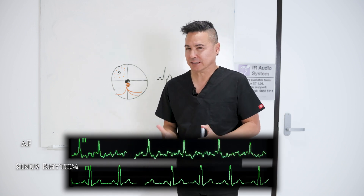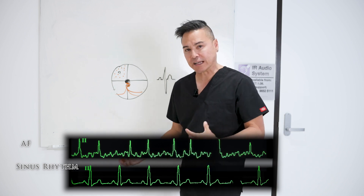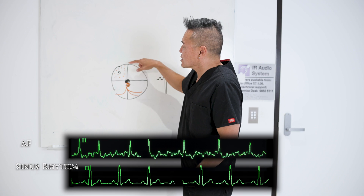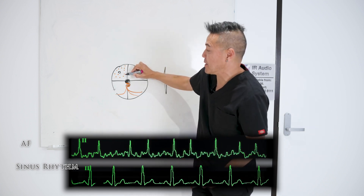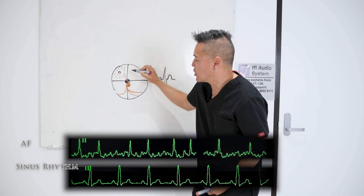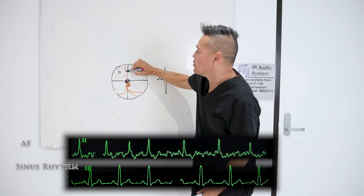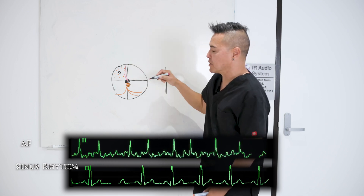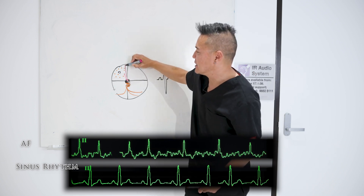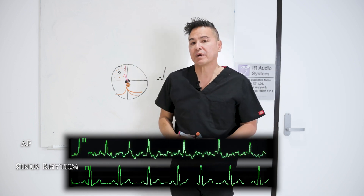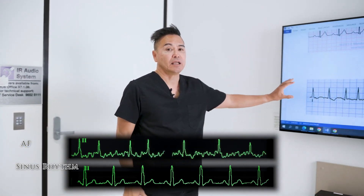It's kind of like the seagulls in Finding Nemo — all randomly calling out on the beach. These atrial foci fire off electricity chaotically. One fires and hits the atrioventricular node — we get a QRS complex. Then another fires, just like those seagulls, and we get another AV response and another QRS complex. The distance from each atrial foci to the AV node is different, so when they fire randomly we get an irregular beat, as represented in atrial fibrillation.